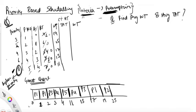Turnaround time (TAT) equals completion time minus arrival time. So: P1 = 19 − 0 = 19; P2 = 25 − 1 = 24; P3 = 17 − 2 = 15; P4 = 13 − 3 = 10; P5 = 11 − 4 = 7.